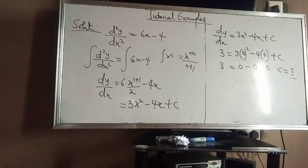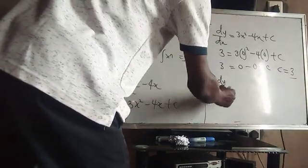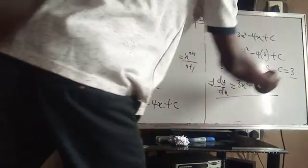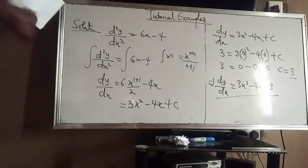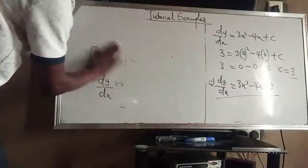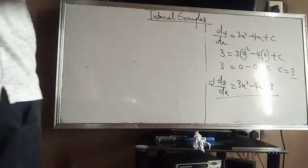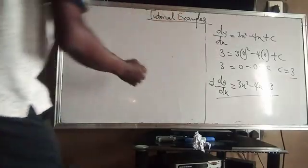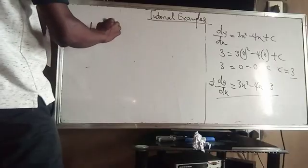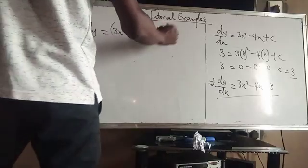That means our c is 3. So dy/dx = 3x² − 4x + 3. This now implies — by cross multiplying — that dy = (3x² − 4x + 3) dx.